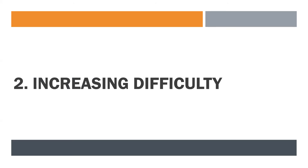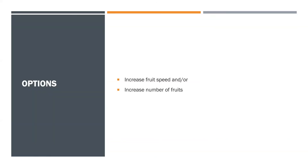Now that we have our head-up display ready, we are going to finish our simple video game by increasing the difficulty as we play. In this video game we can increase the difficulty in two different ways: we can increase the fruit speed — the speed which is used by the fruit to fall down — or we can increase the total number of simultaneous fruits falling from the sky at the same time. We are going to choose the first option and increase the fruit speed every time our player catches more and more fruits.